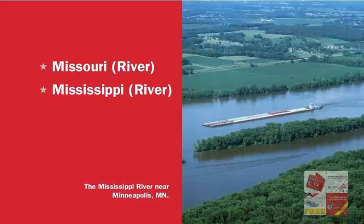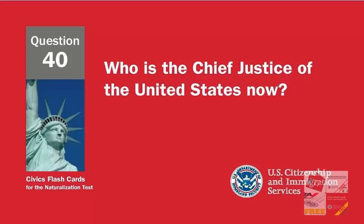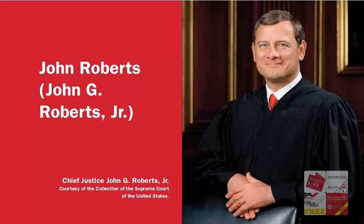Name one of the two longest rivers in the United States. Missouri River. Mississippi River. Who wrote the Declaration of Independence? Thomas Jefferson. Who is the Chief Justice of the United States now? John G. Roberts, Jr.